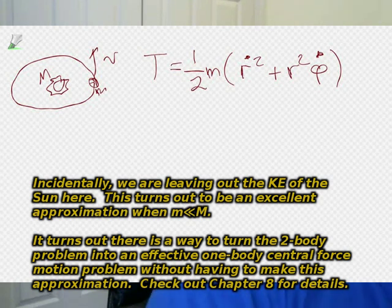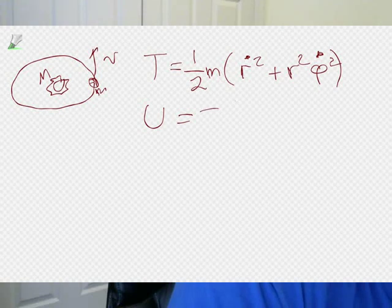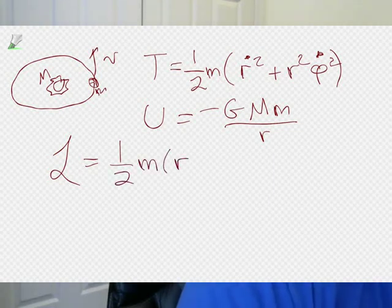Kinetic energy is 1/2 m times v squared, which is r dot squared plus r squared phi dot squared. I'm using polar coordinates. Polar coordinates make a lot of sense here because the direction of the force is always in the negative r hat direction. The potential energy is minus G times the mass of the sun times the mass of the orbiting object divided by r. You can very easily make a Lagrangian out of this just by subtracting the kinetic energy minus the potential energy.